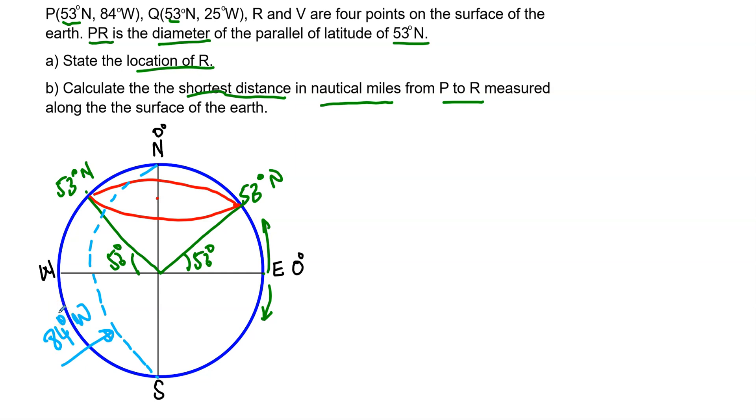We don't really need the Q at this point, so I'm just going to leave the Q for now. Now point P is going to be where the latitude and the longitude intersect. So this is our point P. We're then told PR is a diameter of the parallel of latitude of 53 degrees. So that is our red small circle. Now if this is point P, so if we draw a diameter from there to there, that is where point R is going to be.